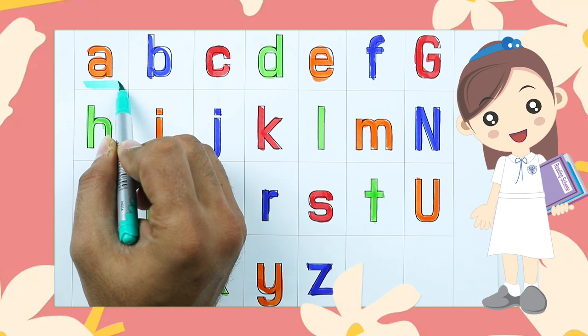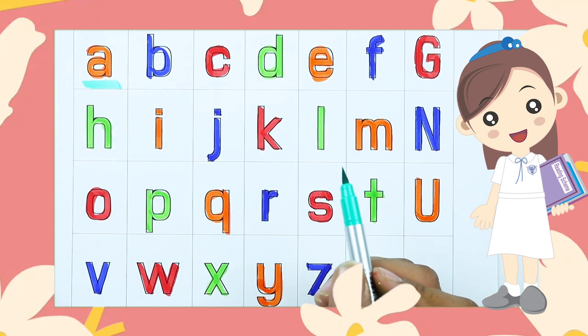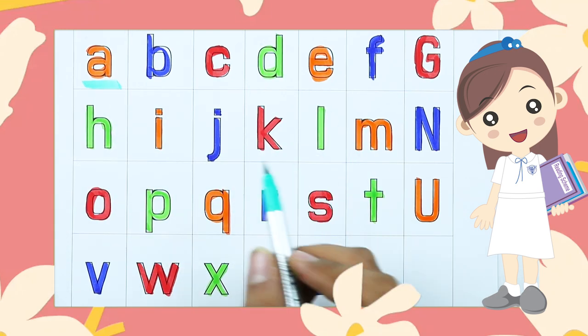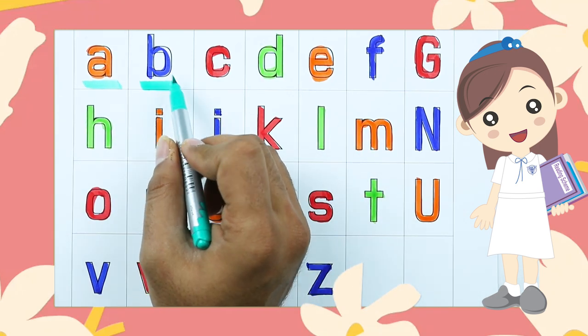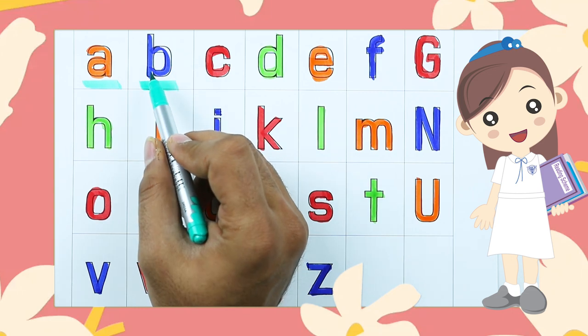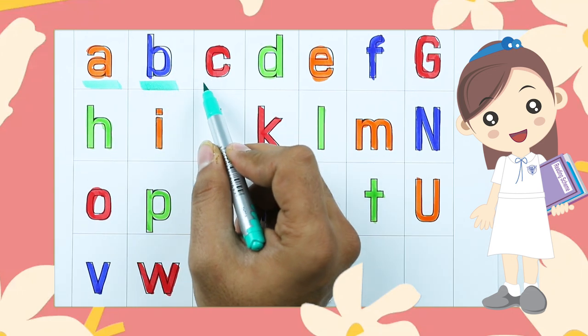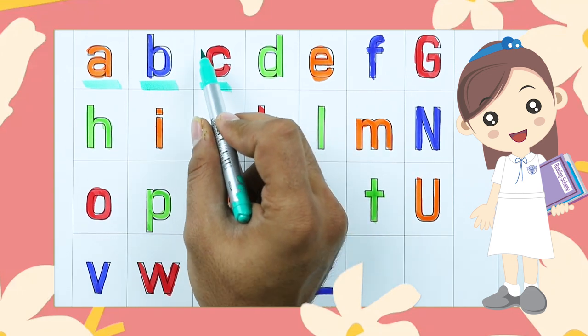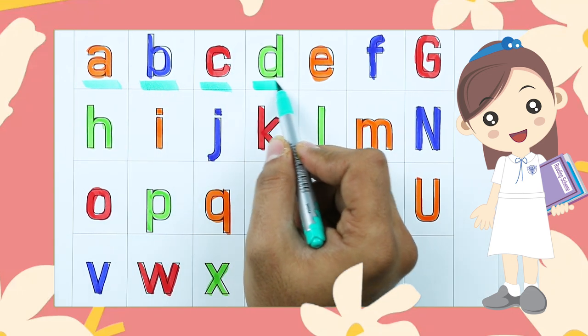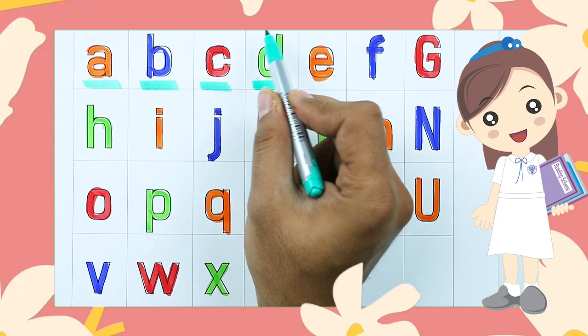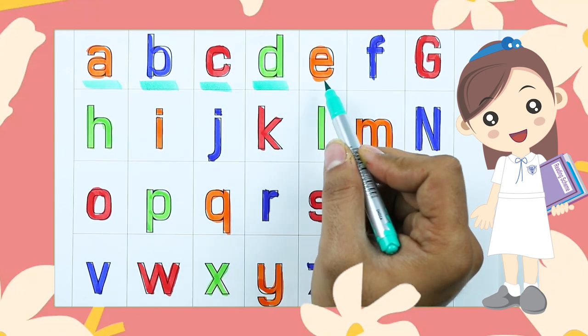Small a. A for apple. B. B for ball. C. C for cat. D. D for dog.